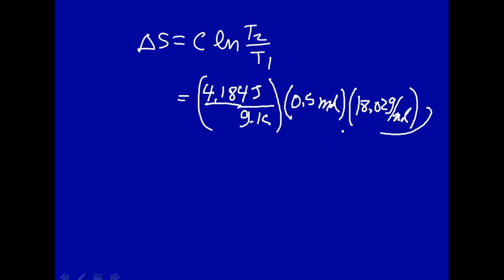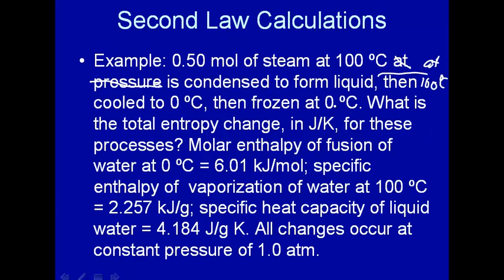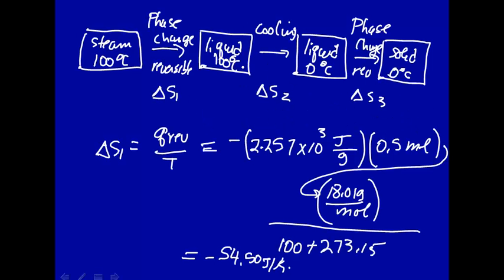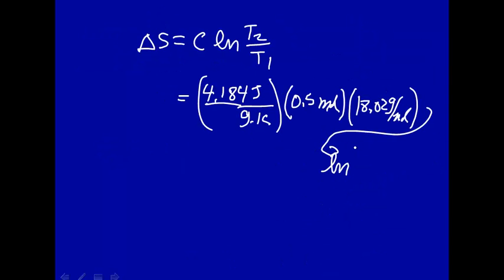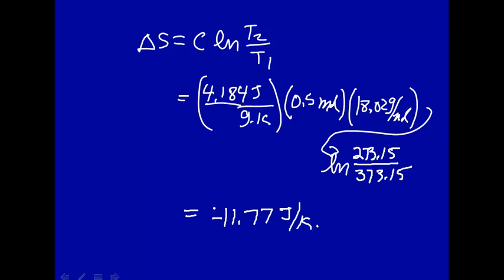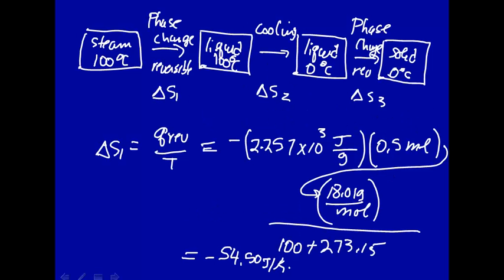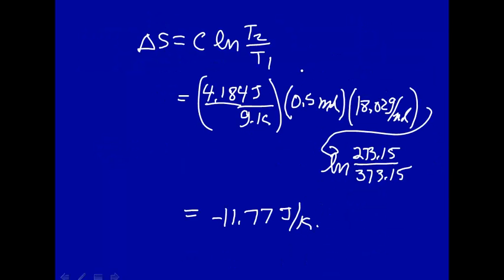To get the extrinsic heat capacity of our system, we multiply by our mass: 0.5 mol times 18.02 gram per mole. Then we multiply by the natural log of the final temperature over the initial temperature. Final temperature is 0°C, which is 273.15 K; initial temperature is 100°C, which is 373.15 K. Plugging these numbers in gives minus 11.77 joule per Kelvin — again negative, as expected. Cooling the liquid means taking heat out, so the system loses entropy.